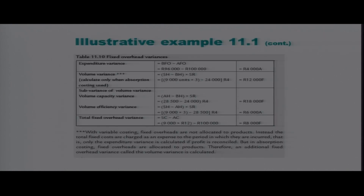Still looking at example 11.1, now focusing on fixed overheads. The fixed overheads expenditure variance formula is: budgeted fixed overheads minus actual fixed overheads. Budgeted fixed overheads from the income statement are R96,000, minus actual of R100,000, giving a difference of R4,000, which is unfavorable, because we budgeted R96,000 but spent more than that.